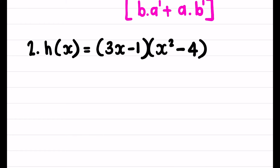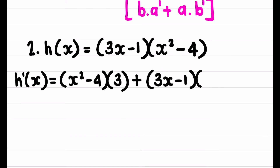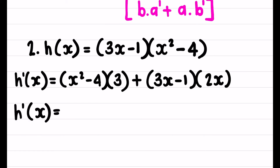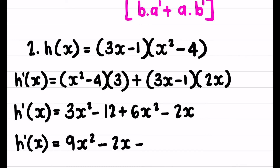For the next product rule example, using b times a′ plus a times b′: the derivative of h equals b as-is (x² - 4) multiplied by the derivative of a (3x - 1), which is 3; plus a as-is (3x - 1) multiplied by the derivative of b (x² - 4), which is 2x. Multiplying out and simplifying gives the derivative equal to 9x² - 2x - 12.